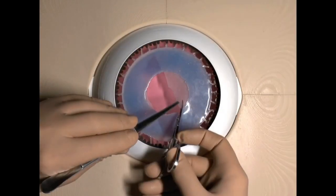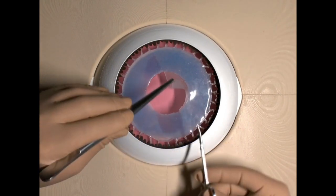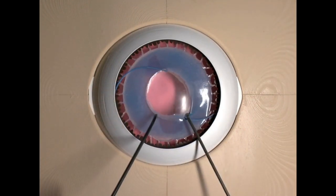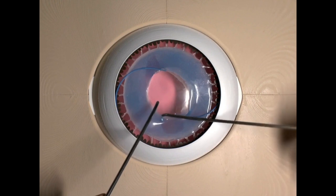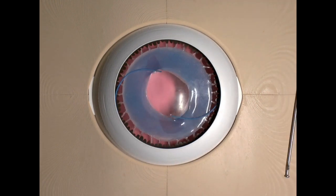Extensive damage or poor visualization of the posterior capsule with intact anterior capsuloraxis is an ideal opportunity to implant a three-piece lens in the sulcus with optic capture.